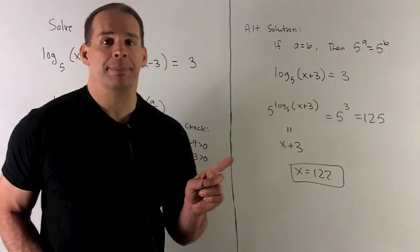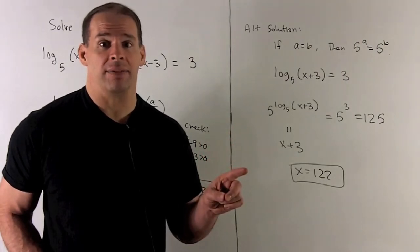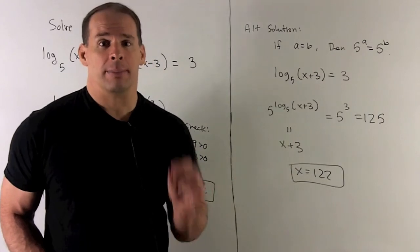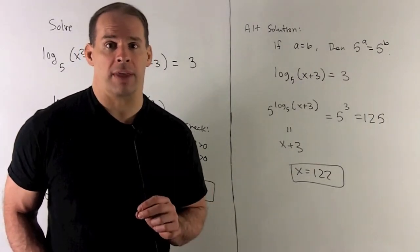On the other side, we have that 5 cubed. We write that as 125. Now I can just push the 3 over and then I get my x equal to 122. And that agrees with our other method.